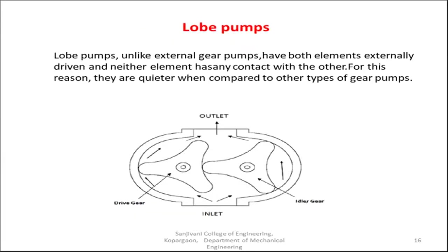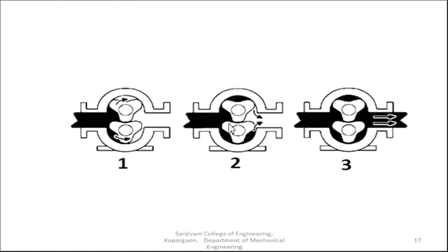Lobe pumps are very common and have applications in industries such as toothpaste manufacturing. The lobes function similarly to gear pumps — instead of gears we have lobes. This diagram shows the action of the lobe pump. It is mainly used in the paper industry or toothpaste industry to handle slurry or paste.